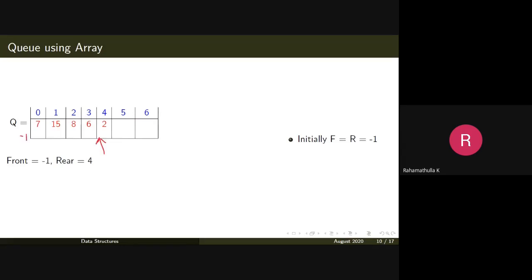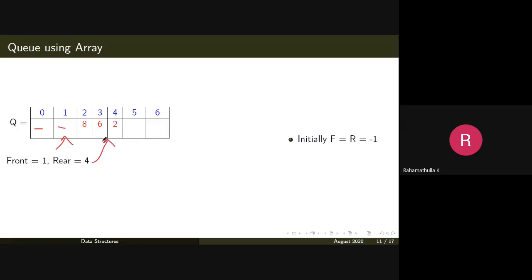If you delete some elements — say seven and fifteen are deleted — those positions are now blank. Front is pointing one position back from the next element to be deleted, and rear is pointing to the last element. So if front equals one and rear equals four, you have four minus one equals three elements in the queue. The delete operation increments front: front moves to point to the next element, then you delete it.